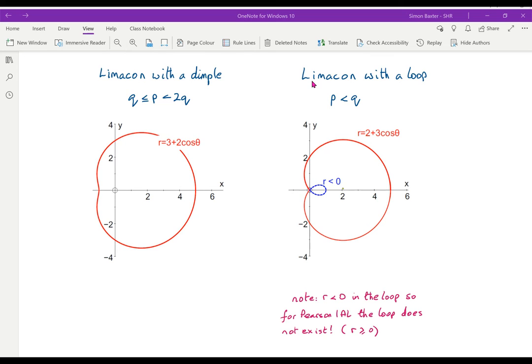This one you won't find an example in your book. p less than q, in other words, 2 plus 3 cos theta. When theta is pi, cos pi is minus 1, r is minus 1. So there will be some values where r is negative.